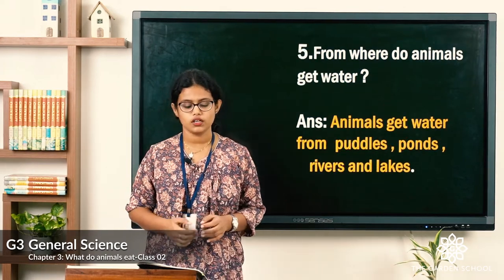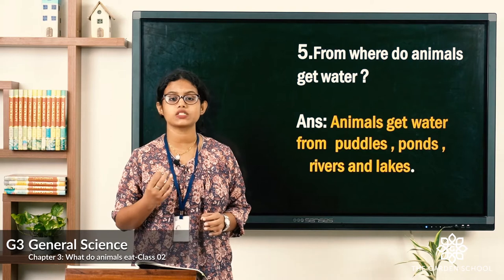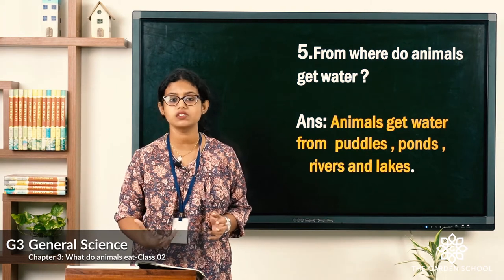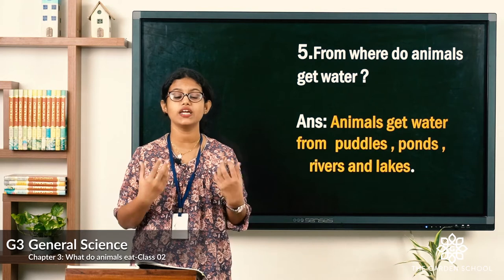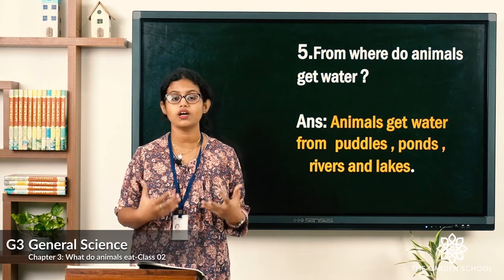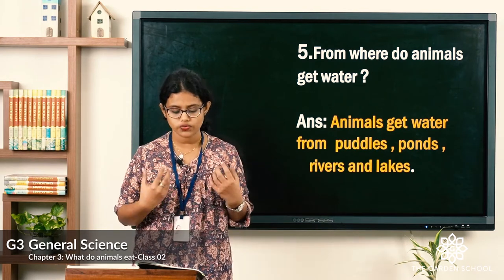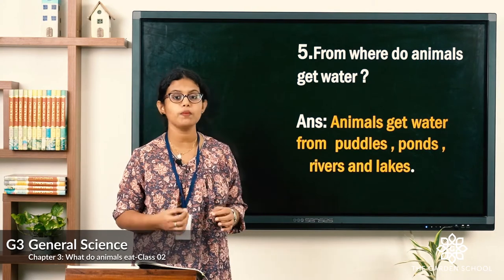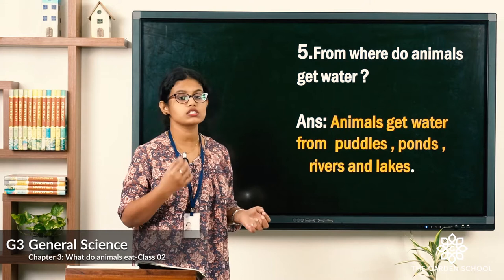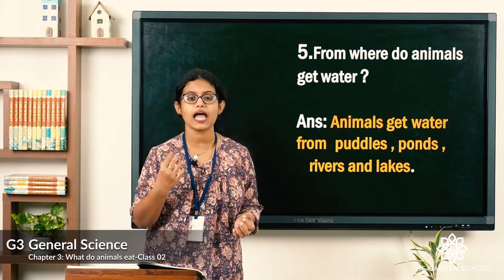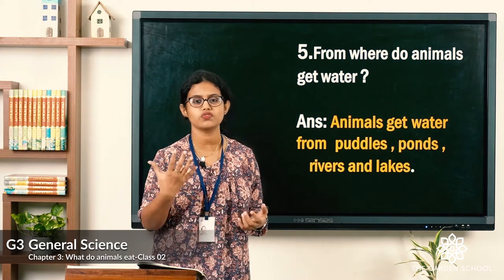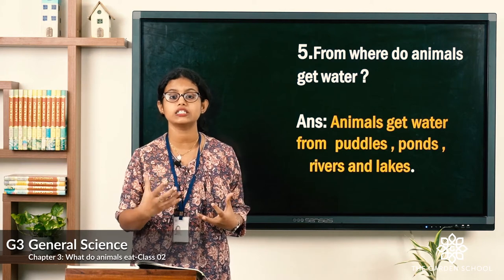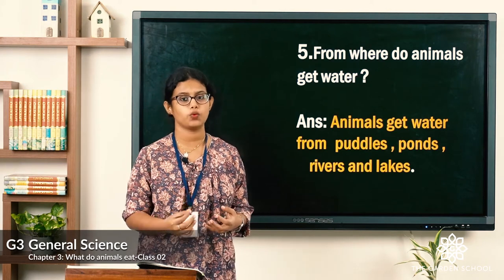Fifth: from where do animals get water? Animals need water to live and live in a place where they get water and food. Animals get water from puddles, ponds, rivers, and lakes. What is a puddle? It is a water pool which is full of muddy and dirty water.